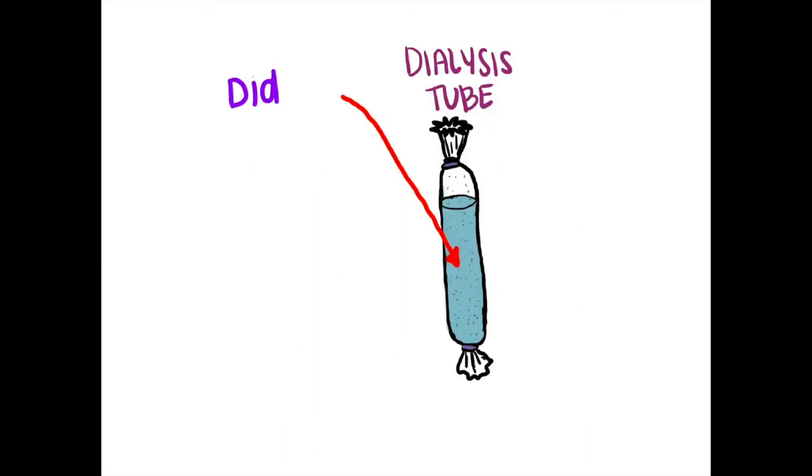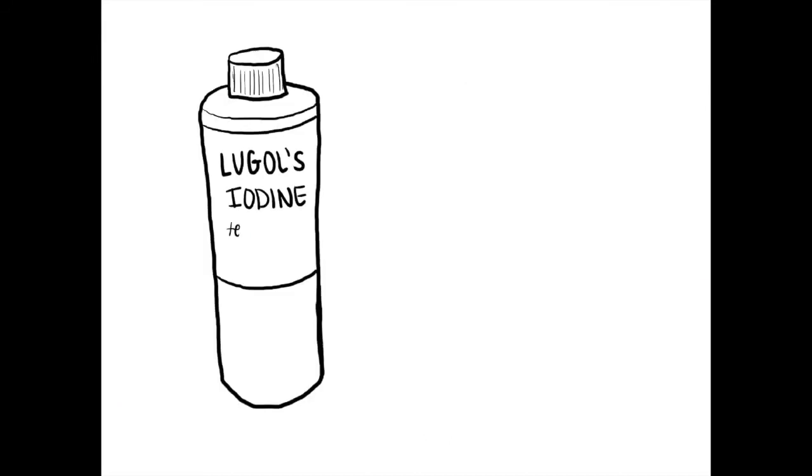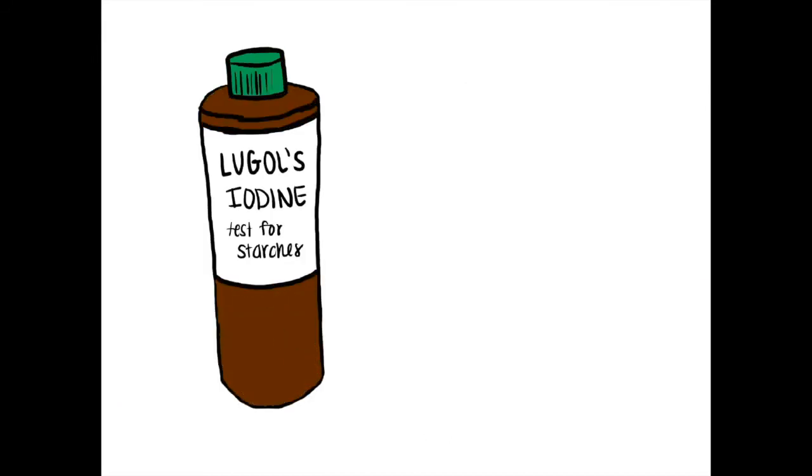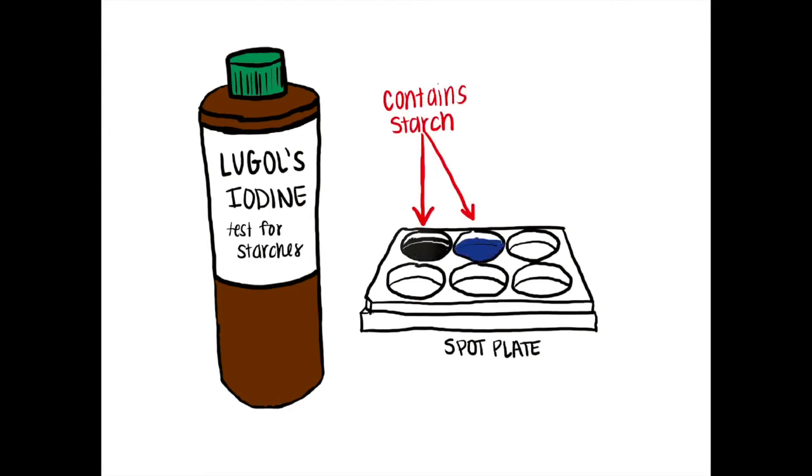We would also need to test the inside of the tube to make sure the starch was actually broken down. For this, we use Lugol's iodine. Lugol's iodine is a chemical indicator that reacts with starch to form a dark blue or black colored solution.